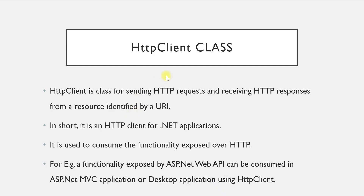HttpClient is a class which is basically used for sending HTTP requests and receiving HTTP responses from a resource identified by a URI. Whenever we want to send a request to the Web API or get a response from the Web API, you have to specify a URI. Whenever you use the HttpClient class, you also have to specify the URI — through that identified URI we can send HTTP requests and receive HTTP responses.